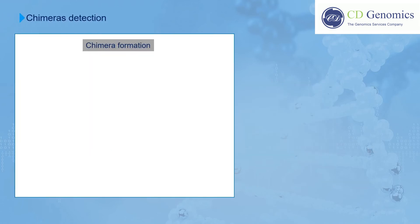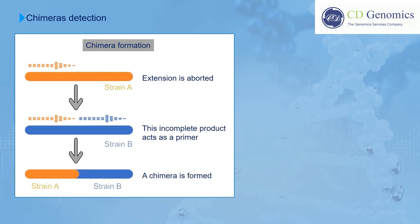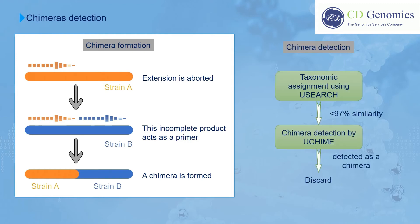Chimeric sequences formed during PCR amplification of the 16S genes are a common source of 16S sequence artifacts when using mixed templates. In the process of chimera formation, an extension from an earlier cycle of PCR is aborted. The incomplete extension product then anneals to and primes DNA synthesis from an incomplete template, and a chimera is thus formed. If a sequence matches a reference sequence with similarity less than 97% and is labeled as a chimera by the UCHIME algorithm, it is then discarded.